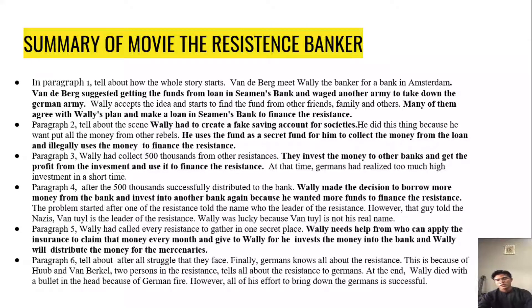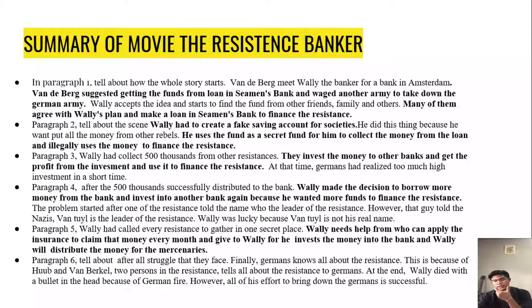In paragraph 2, I talked about the scene where Wally had to create a fake saving account for societies. He did this because he wanted to collect money from other rebels and use the fund as a secret fund to illegally finance the resistance. In paragraph 3, Wally had to collect 500,000 from other resistance members. They invested the money in other banks and used the profit to finance the resistance. At that time, the Germans realized there was too much high investment in a short time.